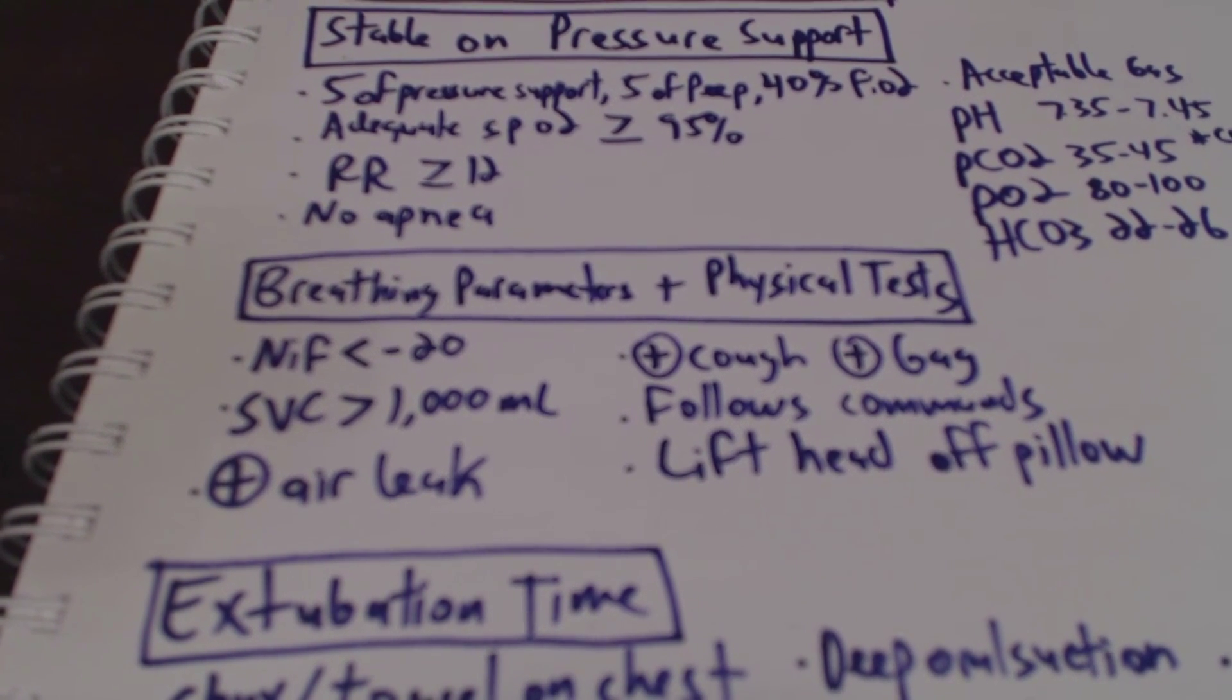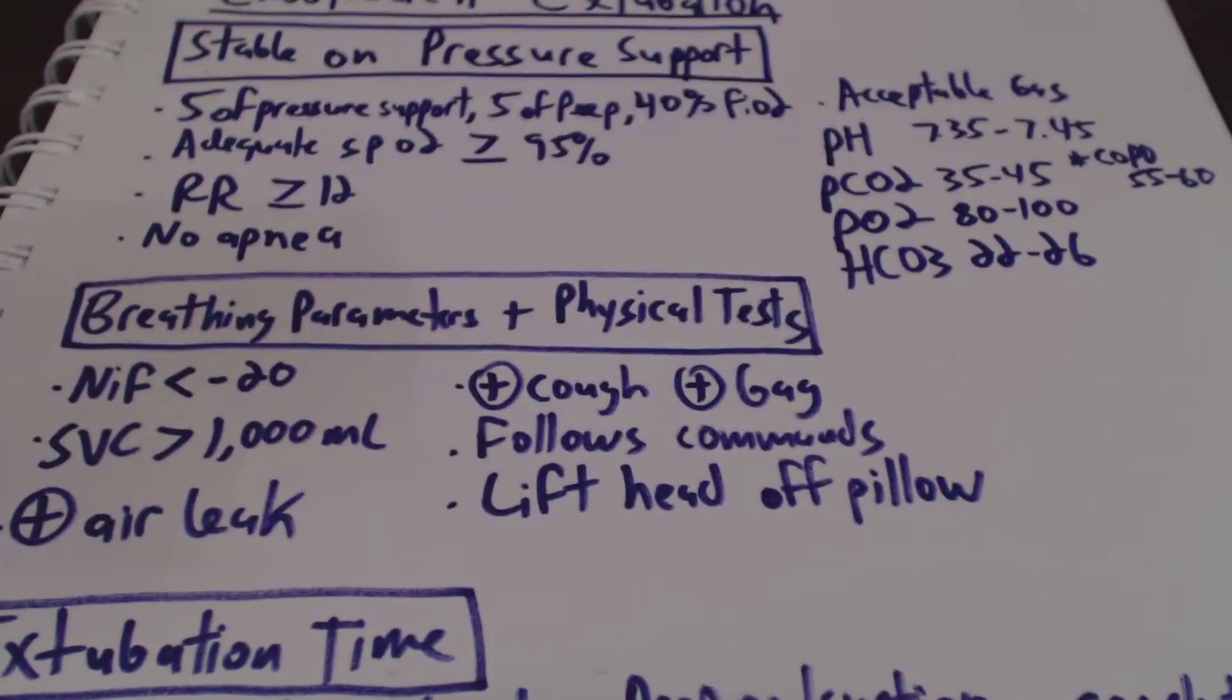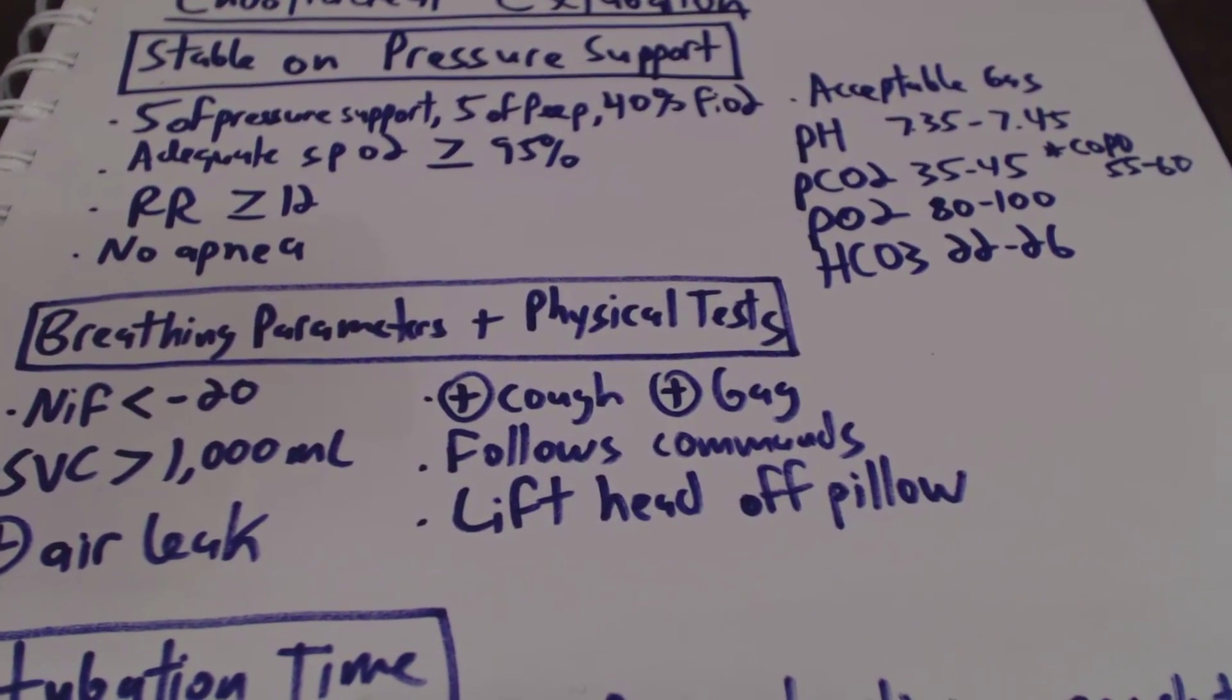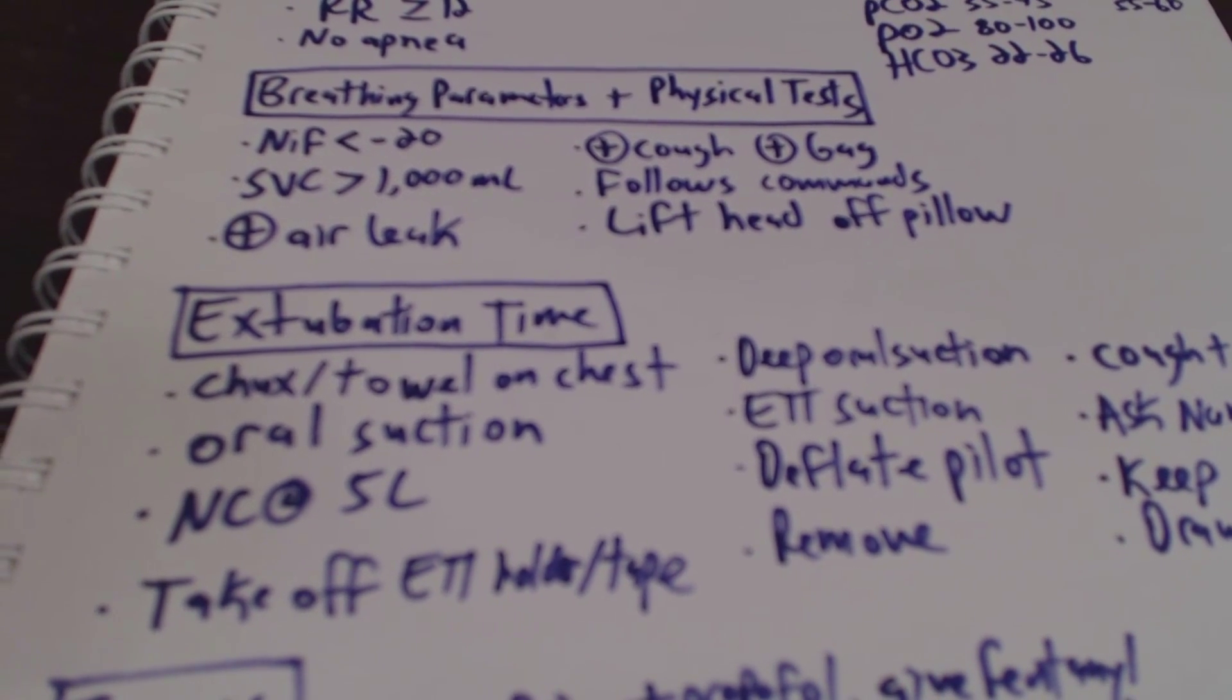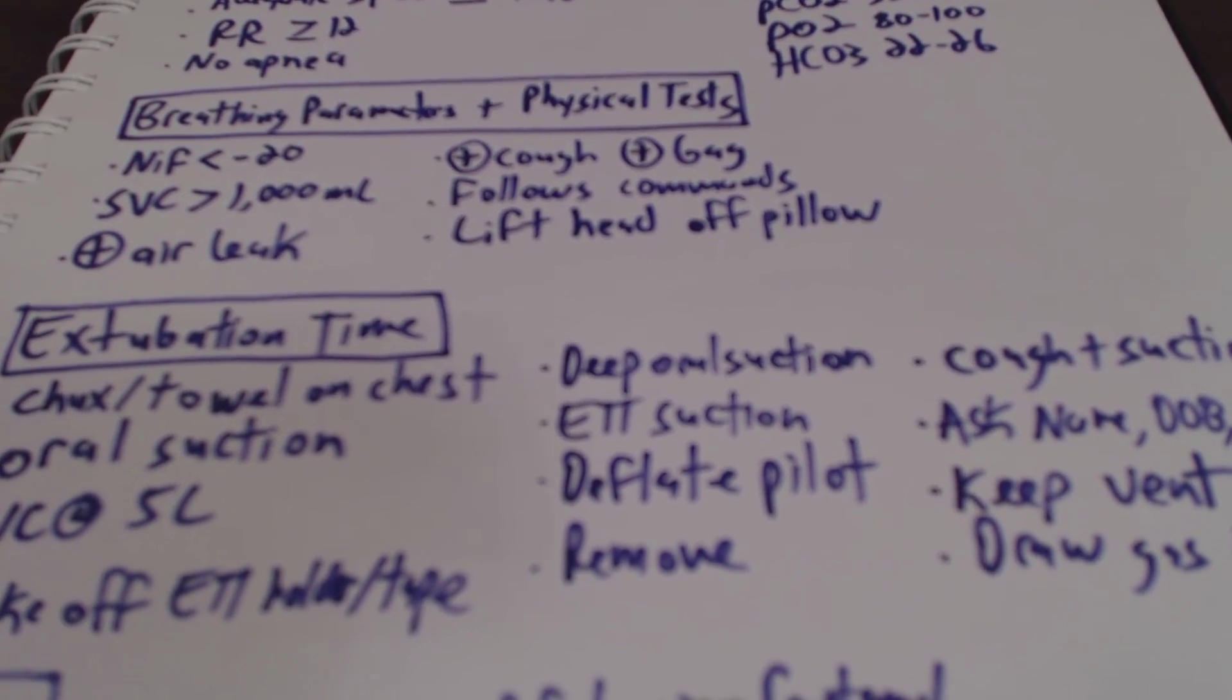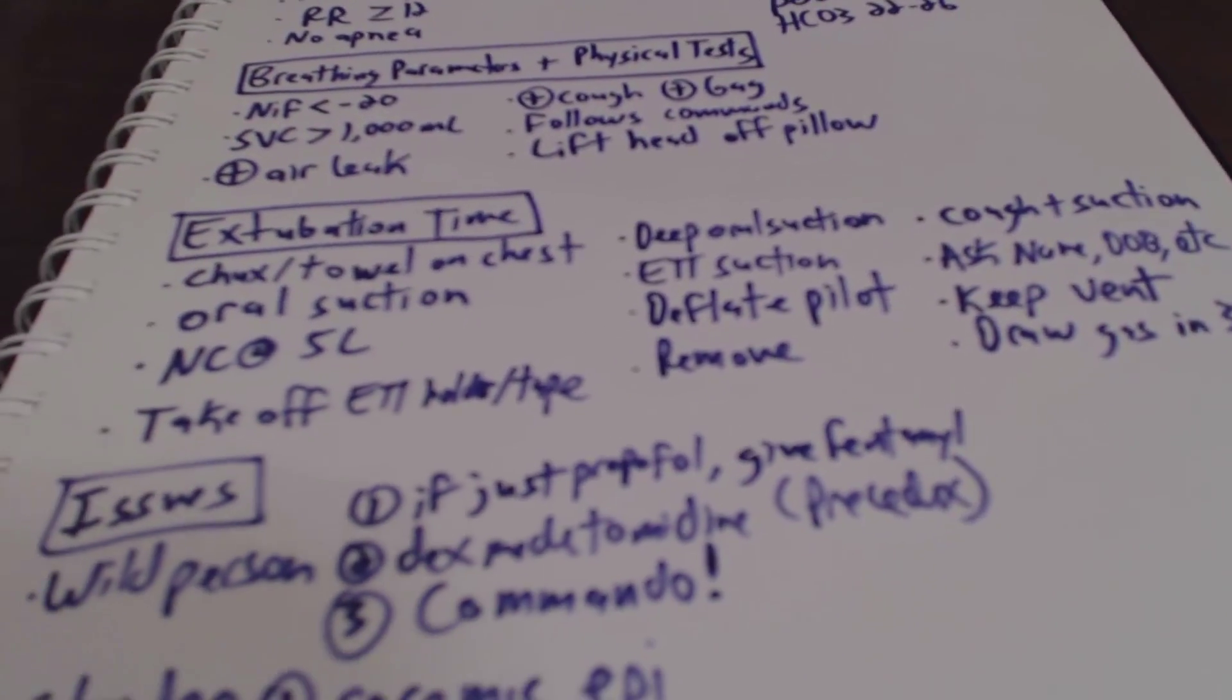We're going to want to make sure the patient has a positive air leak to make sure that they have a patent airway so the upper airway doesn't close. And if we don't give the racemic epinephrine in time, we're going to be doing an emergent cricothyroidotomy, which no one wants to do. We're going to also have the positive cough, positive gag, once again, two different things. Very important to be able to differentiate between the two. We want to make sure the patient is following commands and lifts the head off the pillow, not completely necessary, especially for our neuro population and patients who have a stroke. So when it comes to extubation time, we'll do a chucks or towel on the chest to keep the gown clean. Do oral suction, nasal cannula at 5 liters. Take off the endotracheal tube holder and tape. We're going to do deep oral suction and endotracheal tube suction. Deflate the pilot, and finally remove the tube. We'll have the patient cough and we'll suck up any of the secretions and ask their alert and oriented questions. We'll keep the vent in the room sometimes and then draw the gas 30 minutes after. It's always good form.